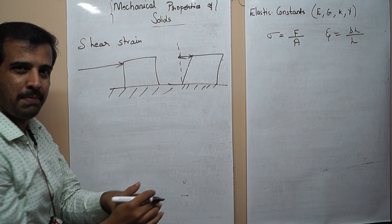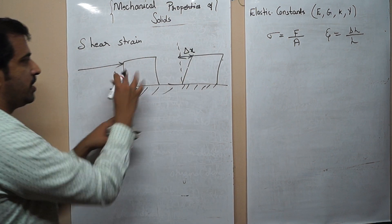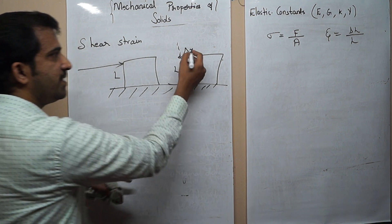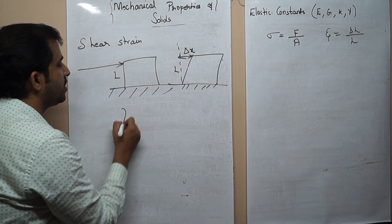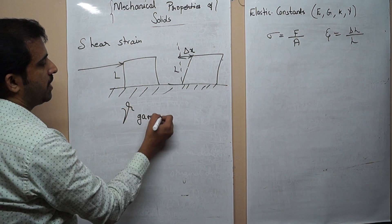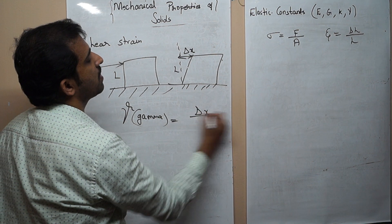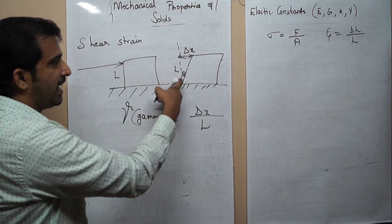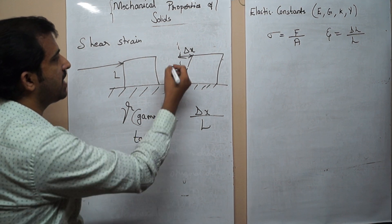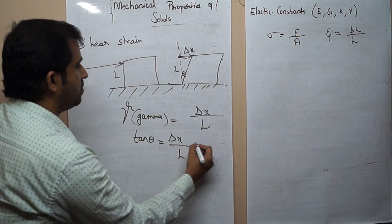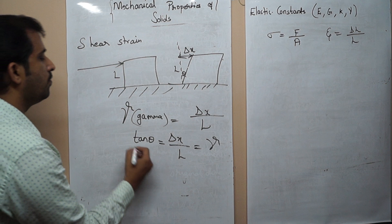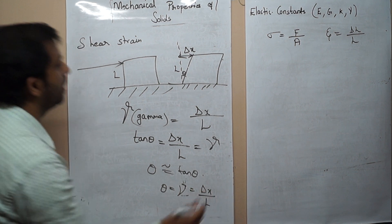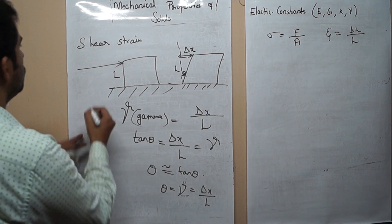Consider the top face displaced by a small amount delta x, with the length of the sheared face being L. Shear strain, indicated by gamma, equals the displacement of the surface divided by the length of the sheared face. The angle theta between the displaced and original position satisfies tan theta equals delta x divided by L, which also equals gamma. For small values, theta is approximately equal to tan theta, so theta equals gamma equals delta x divided by L.